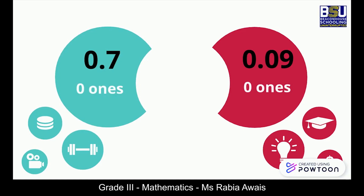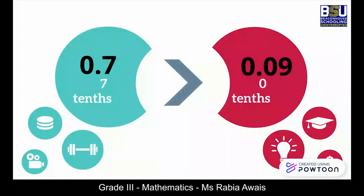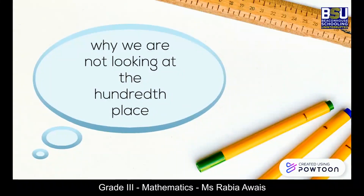So we move on to the next place, which is the tenths place. Number 0.7 has seven tenths in it, whereas the number 0.09 has zero tenths in it. So that by itself tells us that 0.7 is the bigger number. We can show this by using a symbol pointing to the smaller number.